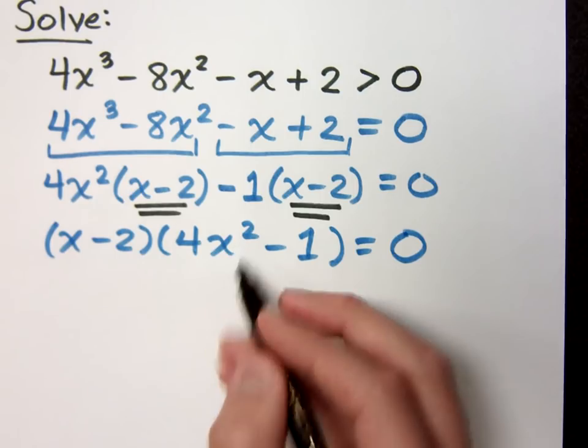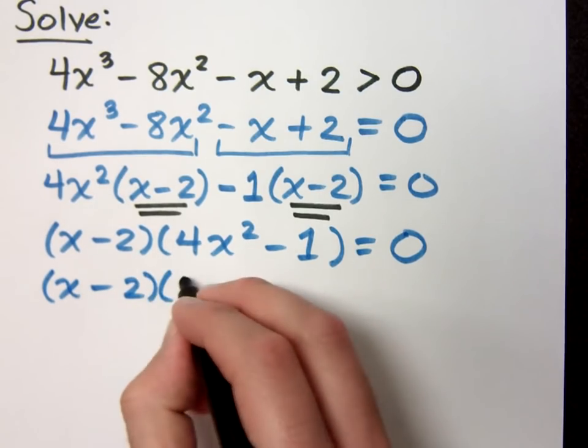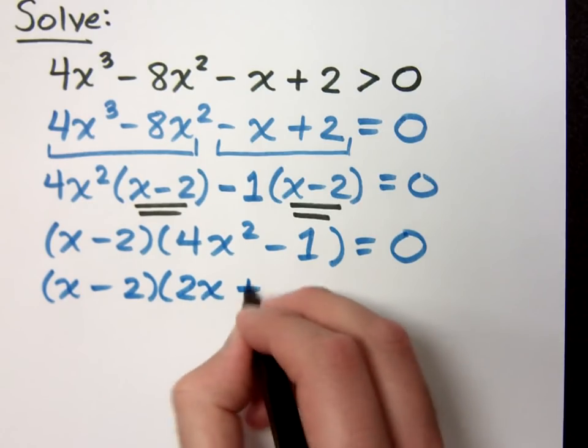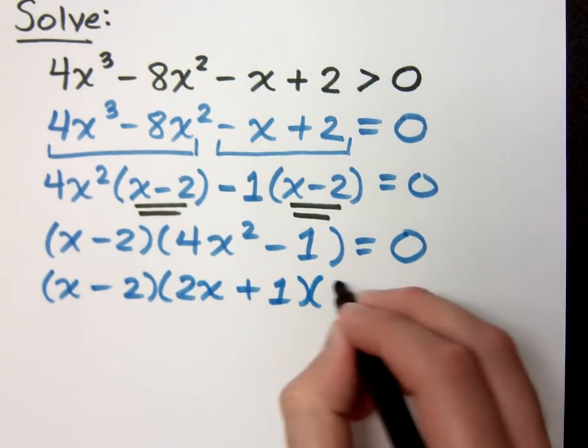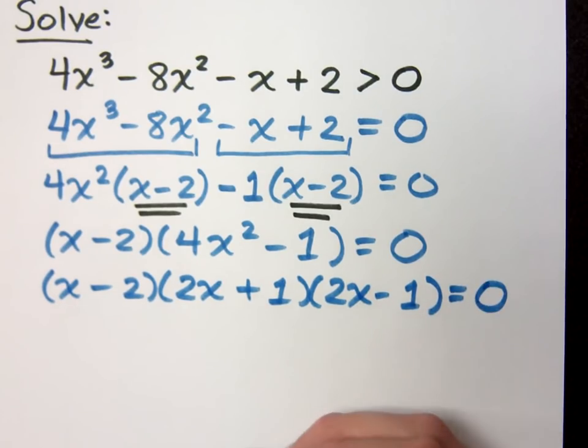Well, this 4x squared minus 1 can still factor a little bit further, so let's go ahead and do that. So 4x squared minus 1 factors as 2x plus 1 times 2x minus 1.